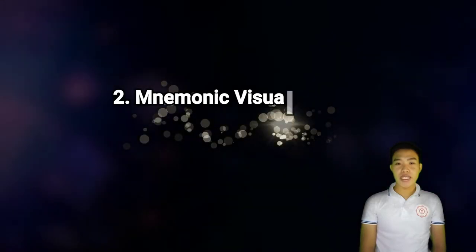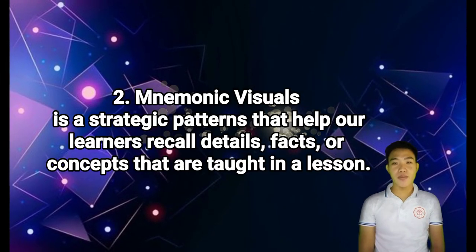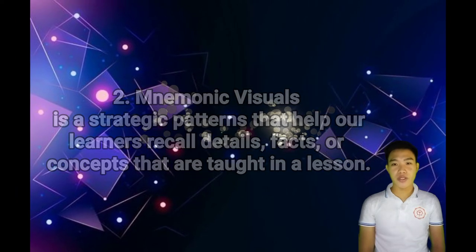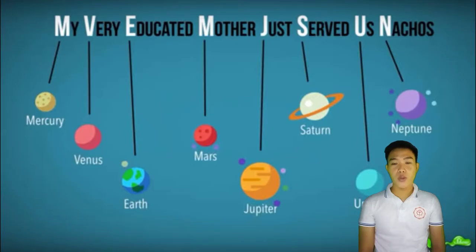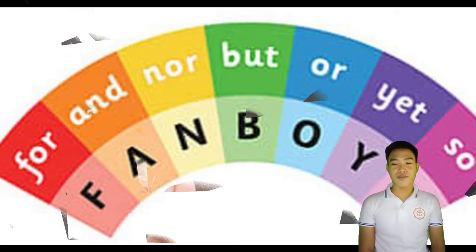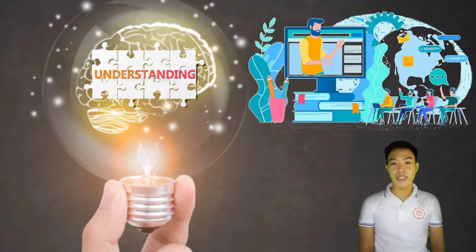As an example, this picture represents modern technology — it's a type of representational visual showing what the concepts of modern technology look like. Number two is mnemonic visuals. These are strategic patterns that help learners recall details, facts, or concepts taught in a lesson. What you are seeing right now is an example of a mnemonic about the planets of the solar system. Another example is a mnemonic for coordinating conjunctions like FANBOYS.